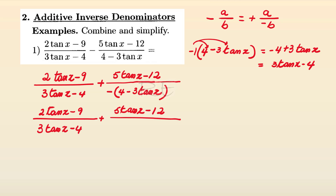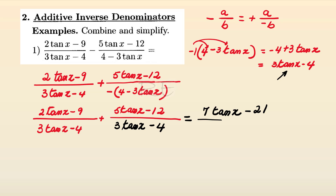Now the denominators are both 3·10^X minus 4, so they are the same. We can combine the numerators: 2·10^X plus 5·10^X plus 5·10^X gives 7·10^X, and negative 9 plus negative 12 gives negative 21. The denominator is 3·10^X minus 4.